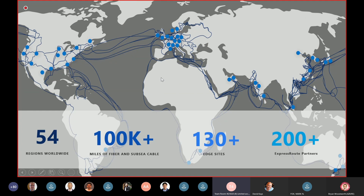One of the key things we talk about with Azure is leveraging our global network. Microsoft has the second largest network in the world — we have the most regions, more than the other top two providers combined. Our network includes a huge amount of our own fiber and subsea cable. We have 130 POPs globally, quite nicely distributed across the globe, and our growing number of ExpressRoute partners speaks to how wide our edge network is.